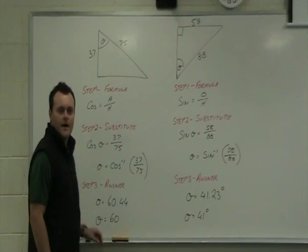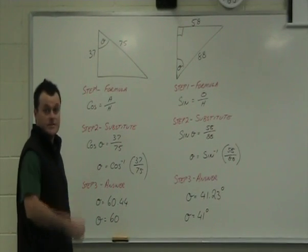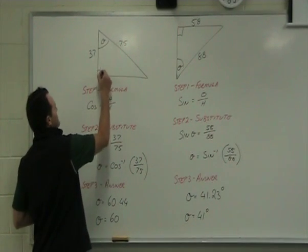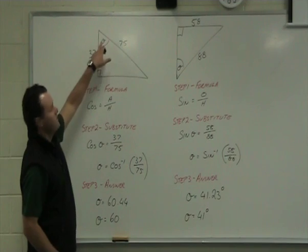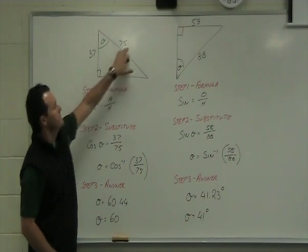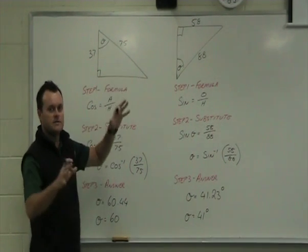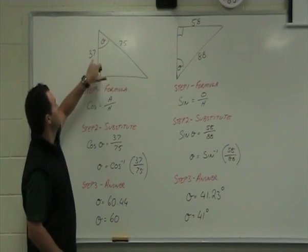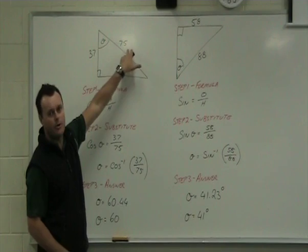Hi, welcome back. I hope you've had a good go at these and let's just see how you went. Our first one was a right angle triangle. Angle's at the top, 37, 75. First things first, look at the angle. What are we given? We're given an adjacent and a hypotenuse.